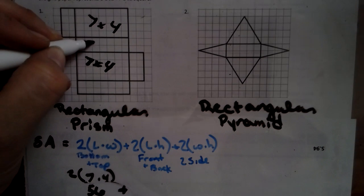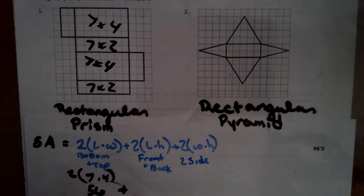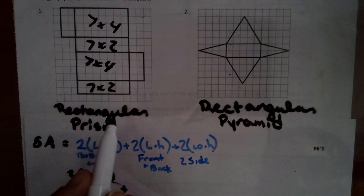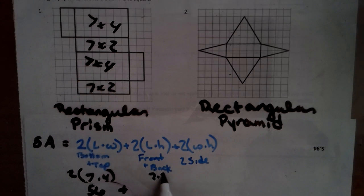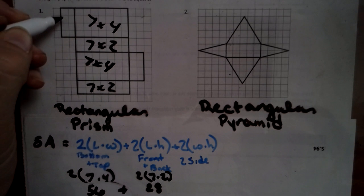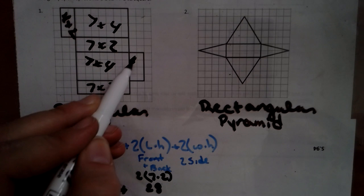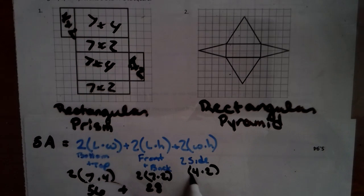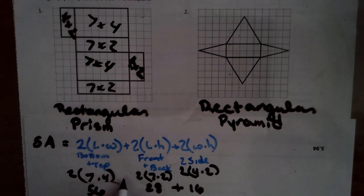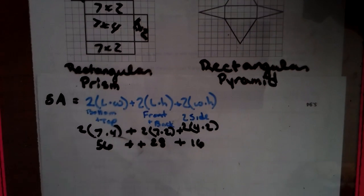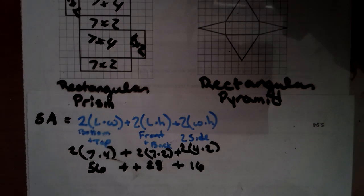Front and back — so we have 7 by 2. So 7 across by 4, which is 7 times 2, and times 2 — so 14, that doubled is 28. And we have 2 sides, we have 2 by 4s. So 4 by 2 doubled, that's 8, so that's 16.